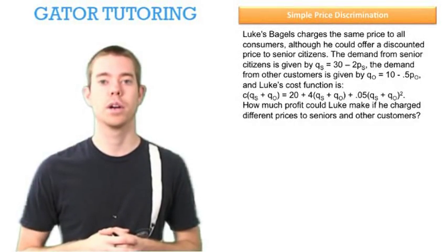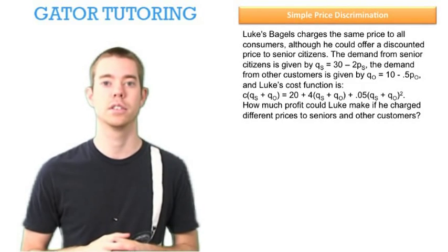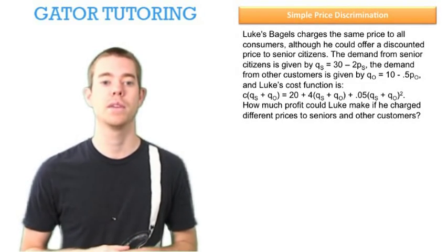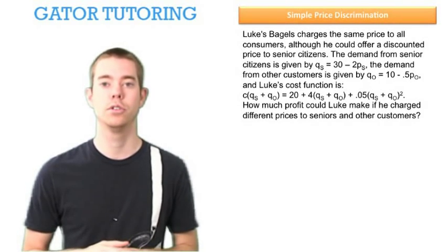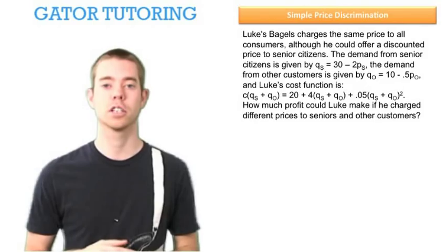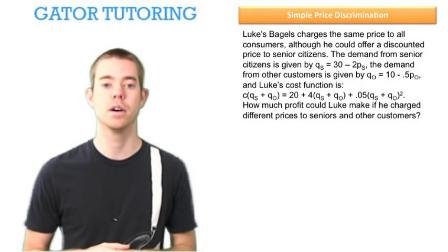Luke's Bagels charges the same price to all consumers, although he could offer a discounted price to senior citizens and increase profit. The demand for senior citizens is given by QS = 30 - 2PS. The demand for other customers is given by QO = 10 - 0.5PO.